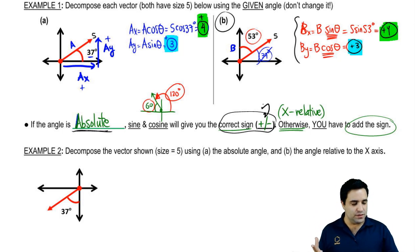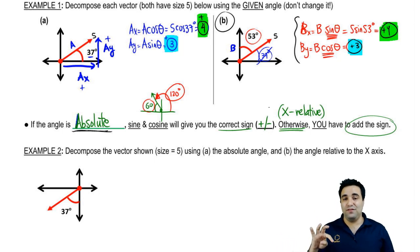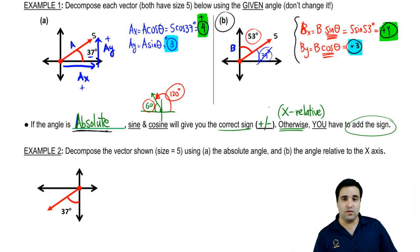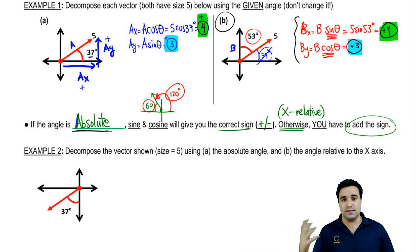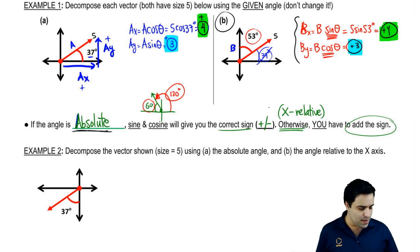Why not just always use the absolute angle? Well, they're both just as much work. To use the absolute angle you have to find it, which might require adding 90 or 180. So either you find the absolute angle and don't worry about signs, or you use the relative angle and handle the signs yourself. It's a matter of preference — different professors do it different ways, so go with whatever your professor prefers.